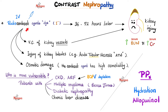The contrast agent is also a highly osmotic agent, which can lead to osmotic damage of the tubules. Patients most at risk include those with chronic kidney disease or acute renal failure, especially if they are old, dehydrated, or in the ICU; patients with multiple myeloma or Bence-Jones proteinuria; patients with diabetic nephropathy; or patients with chronic liver disease. To decrease the risk, hydrate the patient aggressively and you can give allopurinol to lessen the toxic effects of the contrast agent on the kidneys.